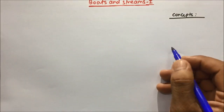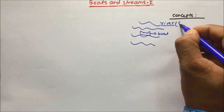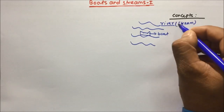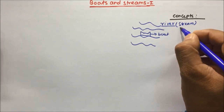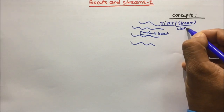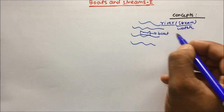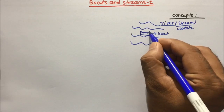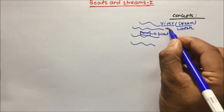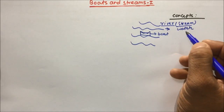The concept behind Boats and Streams is that you will have a Stream and a Boat. The Stream is also called a River, or in many places it will be given as Water. There will be a Boat, and the River and Boat will be moving either in the same direction or in the opposite direction.